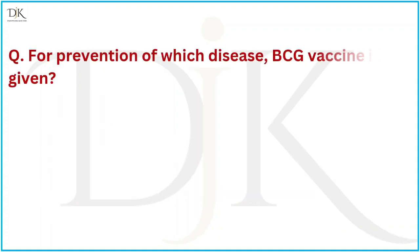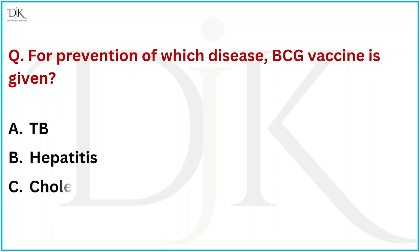For prevention of which disease is BCG vaccine given? The right answer is TB (Tuberculosis).